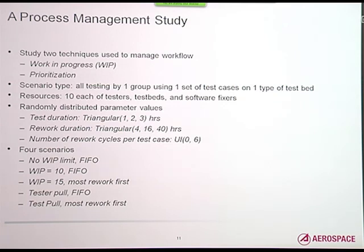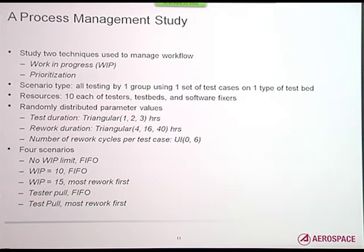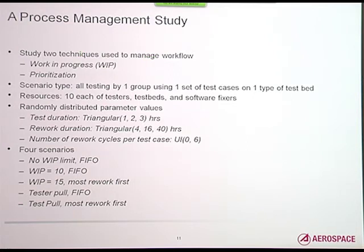Using the model to learn something, we looked at two things. In the world of lean development — part of the agility world — there are a couple of things managed: one is work in progress (WIP), how much work do I let into the queue at a time; and the other is prioritization of the work. I worked with one project where they had eight test beds and eight testers, so they said no more than eight test cases in process at one time.